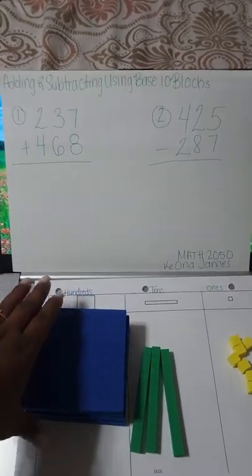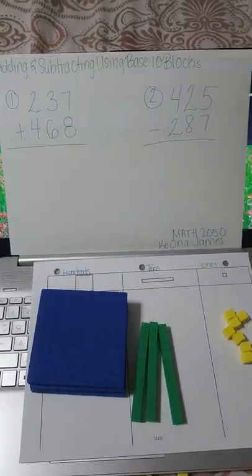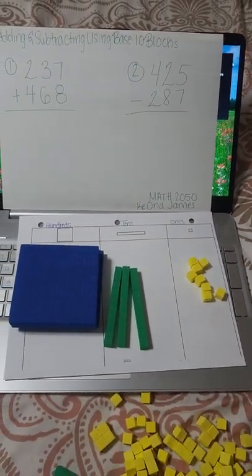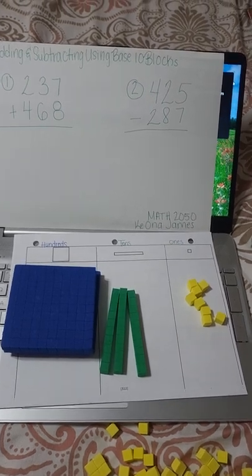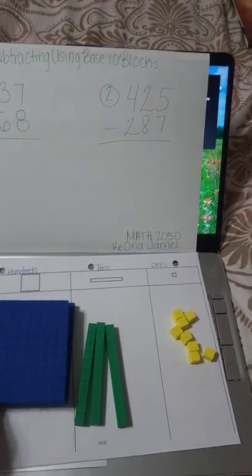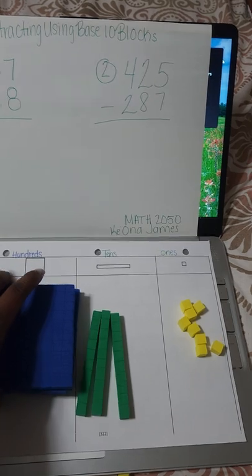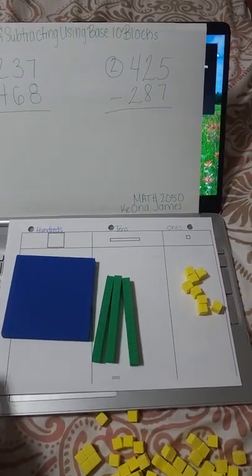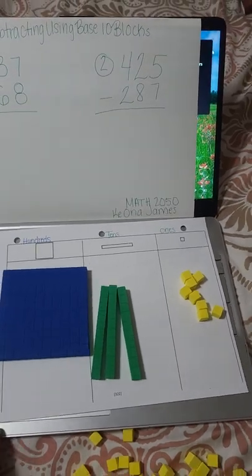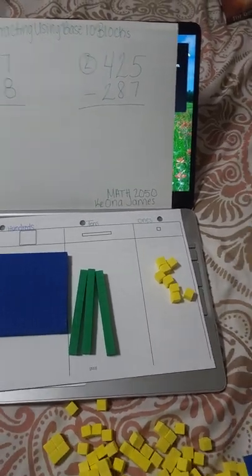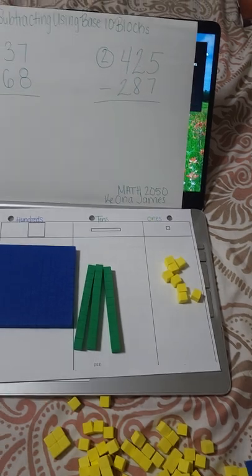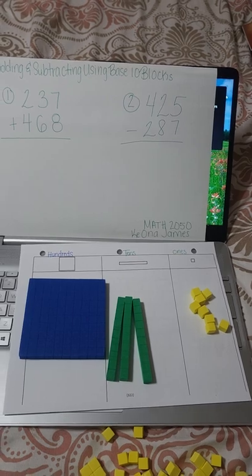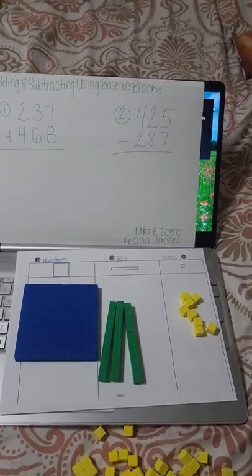Now that we borrowed that hundred, that left us with three hundred. So three minus two is one. Our answer for our problem is one hundred and thirty-eight.